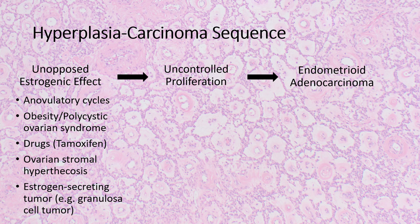Carcinogenesis in the endometrium is complex and involves many potential pathways. However, our basic understanding of the pathway for low-grade endometrioid-type adenocarcinomas is highlighted here. The basic paradigm is you have unopposed estrogenic effect on the endometrium, leading to an uncontrolled proliferation of endometrial glands, and eventually clonal proliferation develops and leads to endometrioid adenocarcinoma. A few examples of potential causes of unopposed estrogenic effect are listed here.